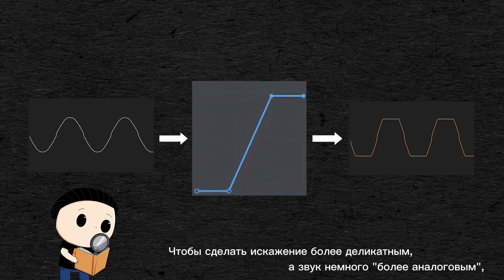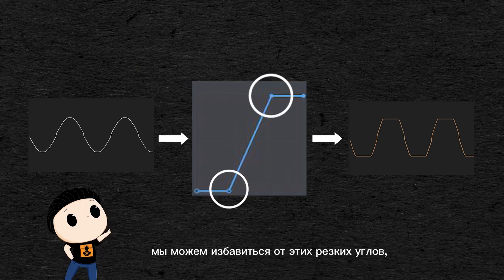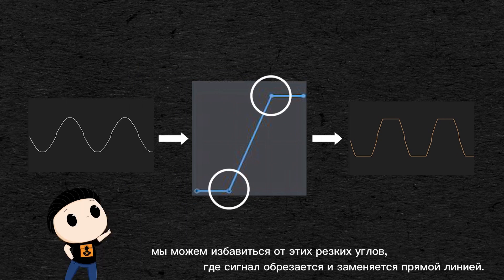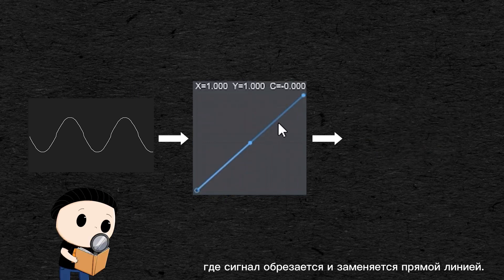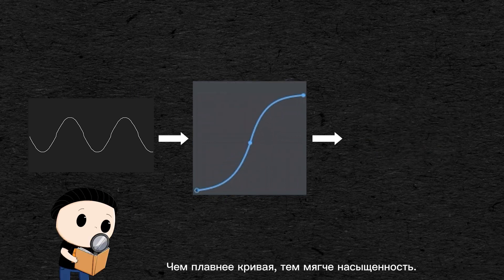To make the distortion more subtle and sound a little more analog, we can get rid of these hard edges where the signal gets clipped, and replace it with a curve. The smoother the curve, the softer the saturation.